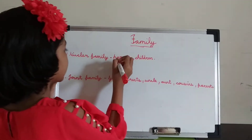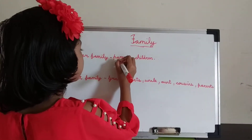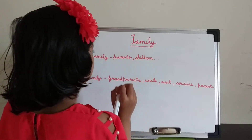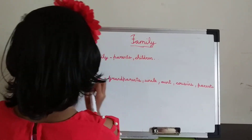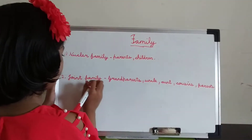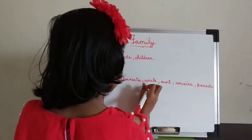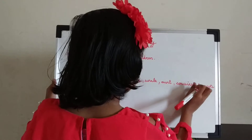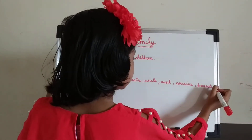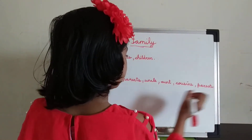Nuclear family — in it, parents and children are in the family. In joint family there are grandparents, uncle, aunt, cousins, and parents are living.